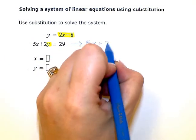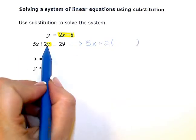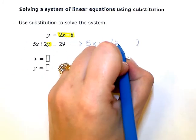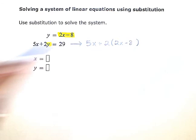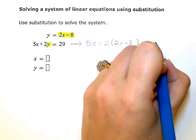and then I'm going to put parentheses, a big space. Because instead of that y, I need to put in that entire expression, 2x minus 8, and then I have equals 29.